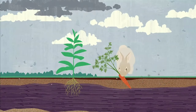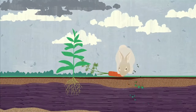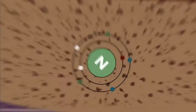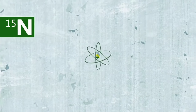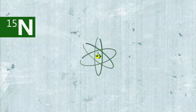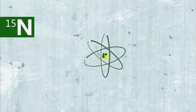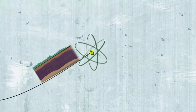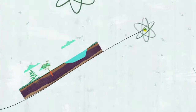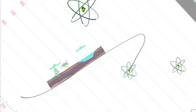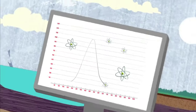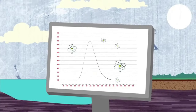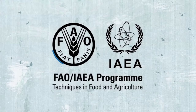To maximize its use while protecting the environment, nitrogen-15, a stable isotope of nitrogen, is an ideal tracer. It can be easily measured in soils, plants, water, and air, both in the laboratory and in nature.